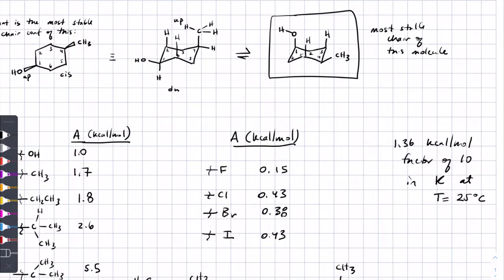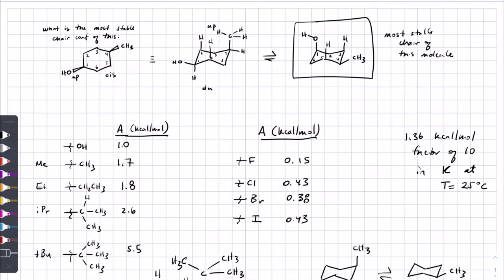Great question — how do you compare different cyclohexanes that have different groups attached? Are all equatorial conformations equal? No, probably not. Am I going to give you different cyclohexanes and say which equatorial confirmation is more favorable where you're only changing the one group? I don't think so.